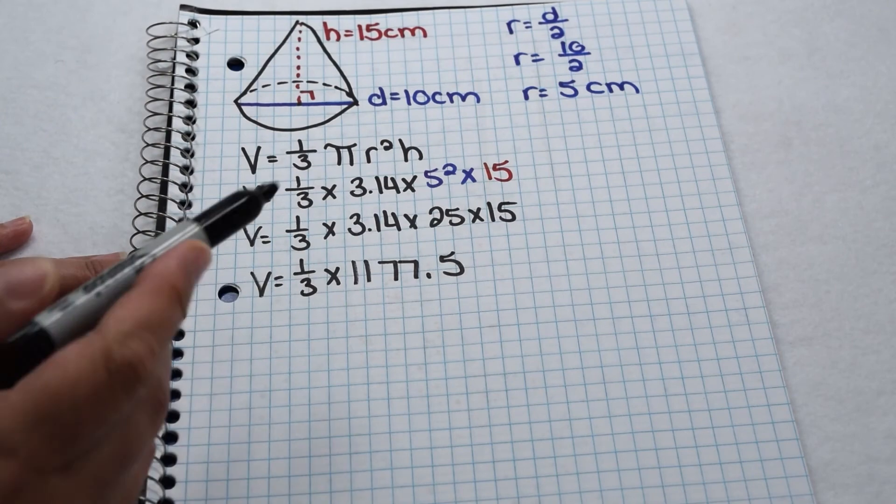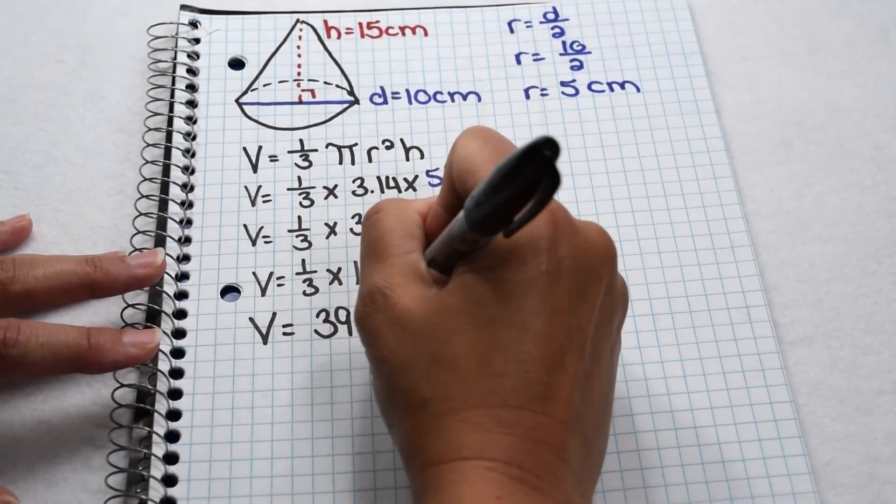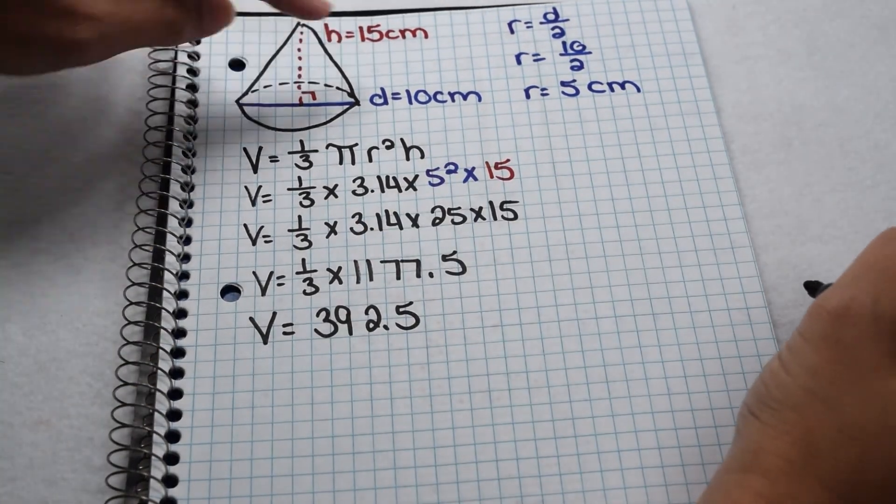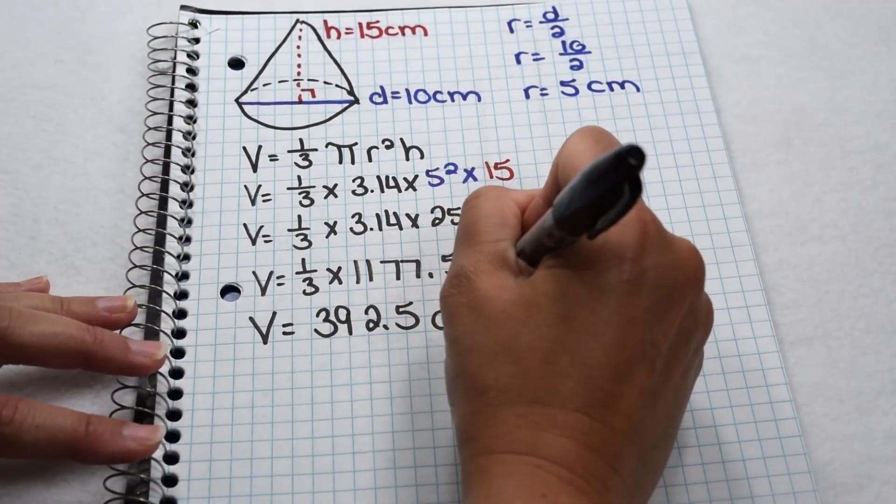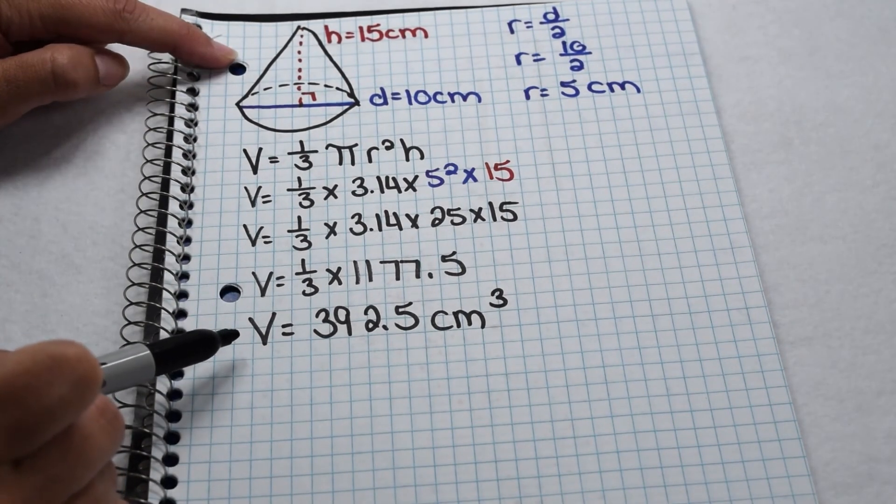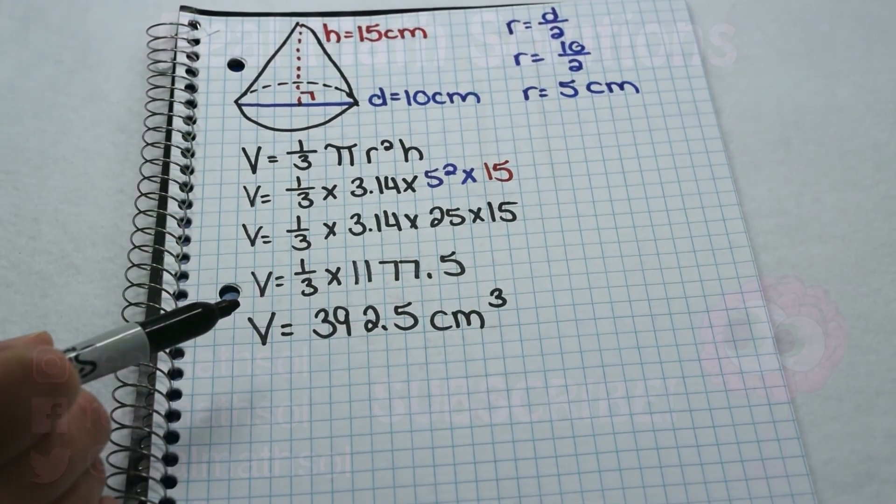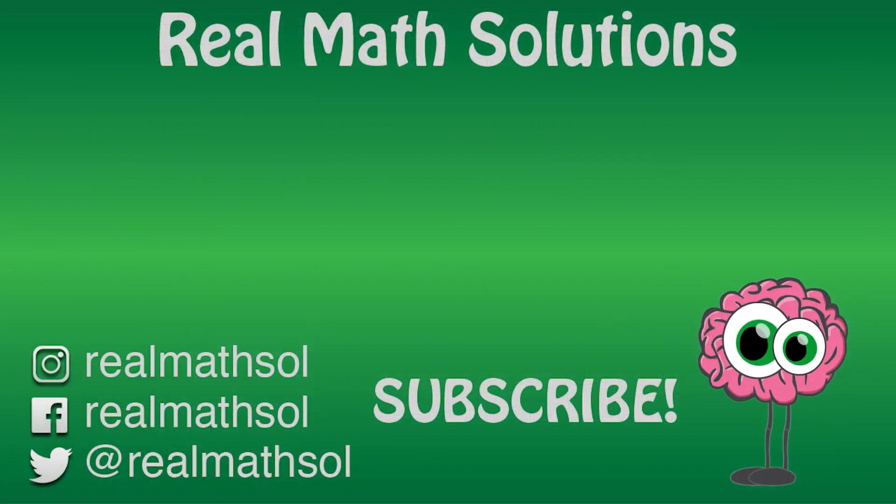So the cone is going to be one-third of that. So here we can multiply by one-third and when we do, that comes out to be 392.5. This is labeled in centimeters, so this is also labeled in centimeters to the third power. So volume of this cone comes out to be 392.5 cubic centimeters.